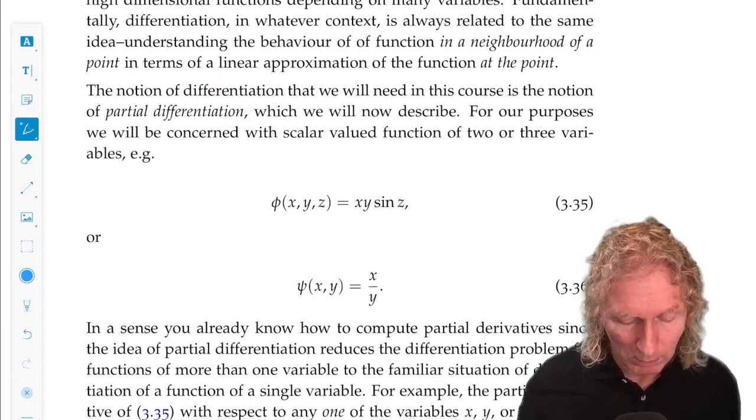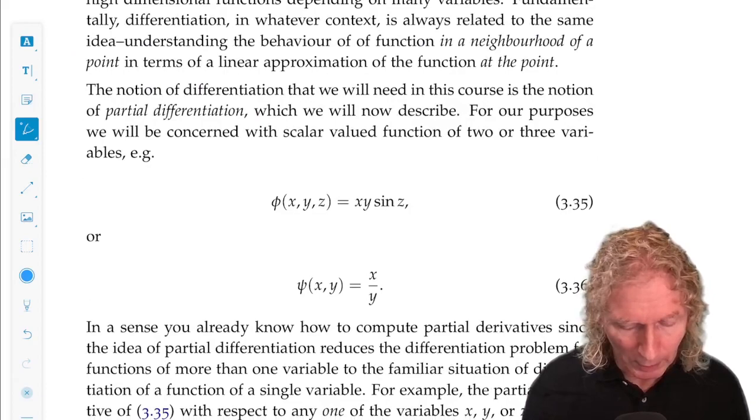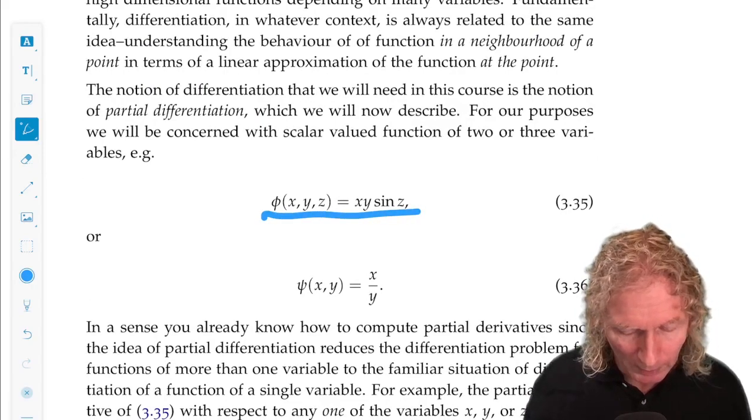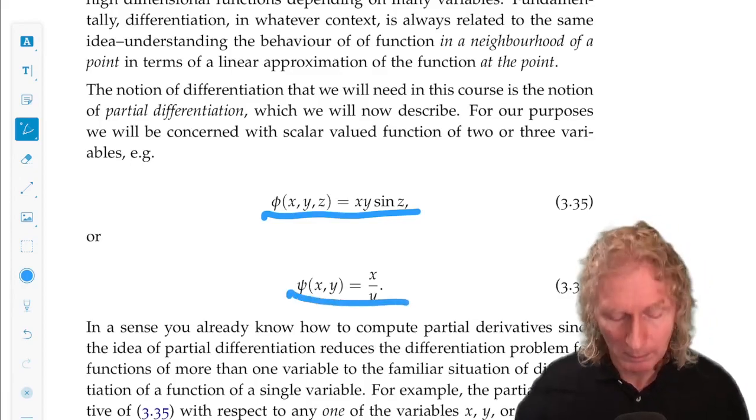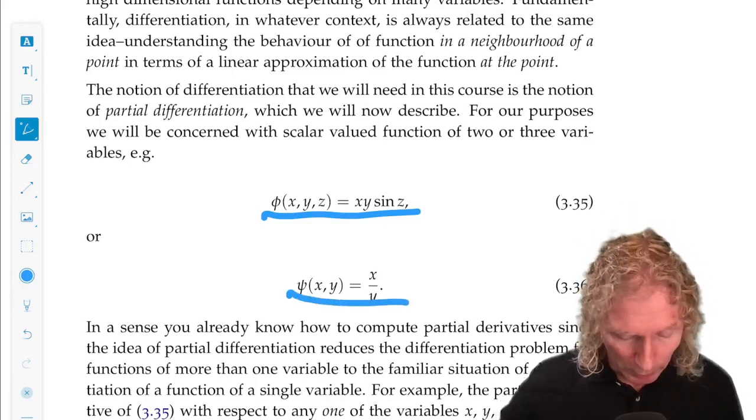So look at a couple of examples. Phi of x, y, z is xy sin z. Phi of x, y is x over y. And we'd like to compute the partial derivatives.